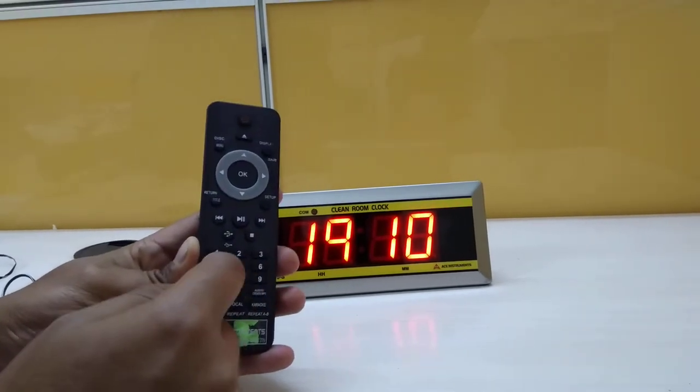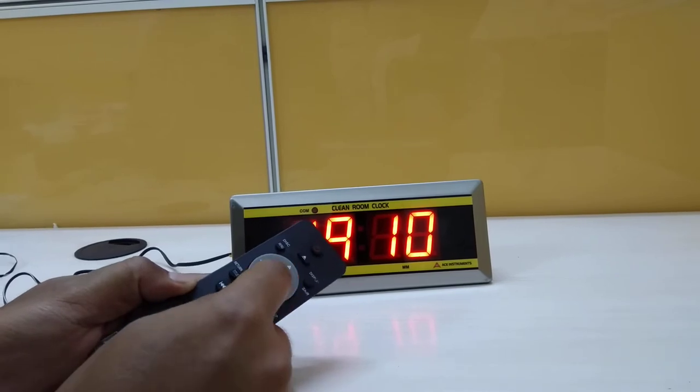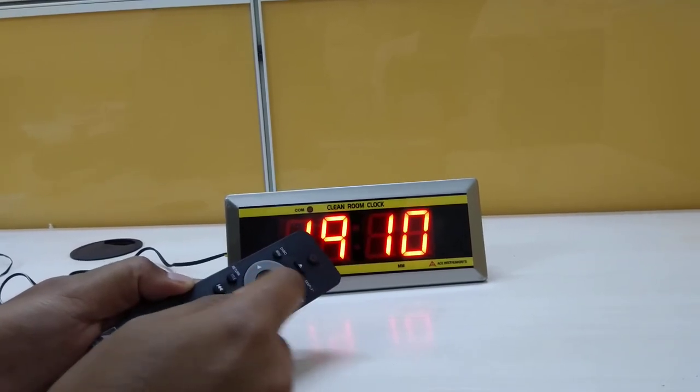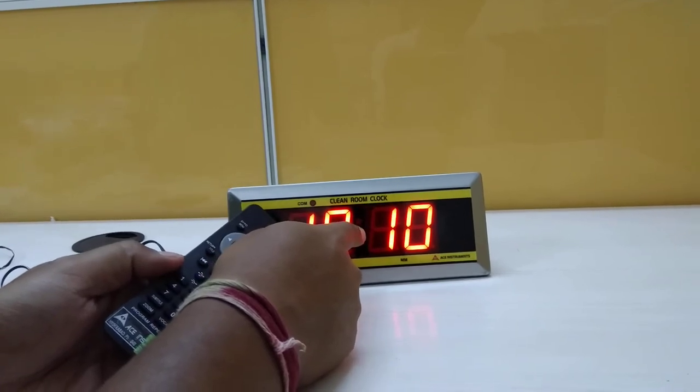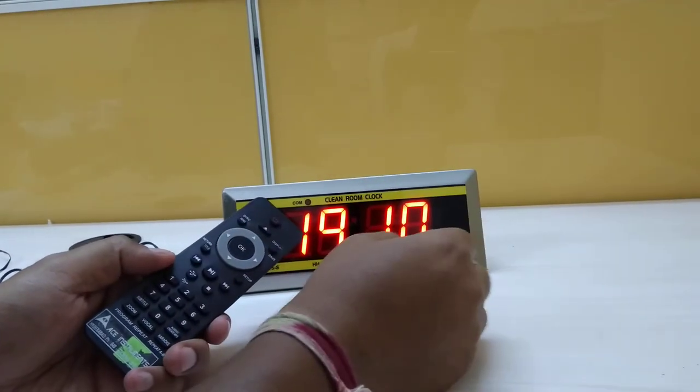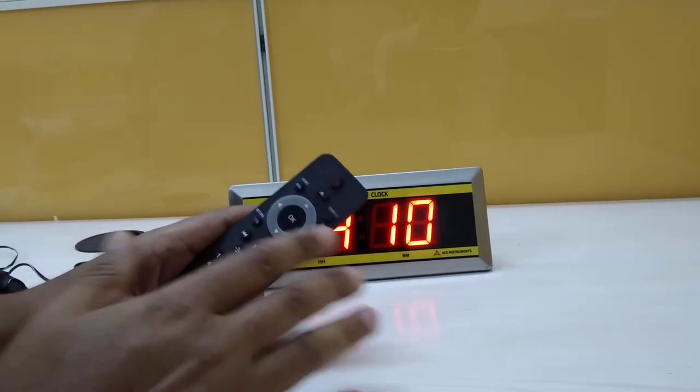We just have to press the numbers, followed by next, next, and then we have to finally press OK. When you press OK, it starts blinking, which means that the time is now set.